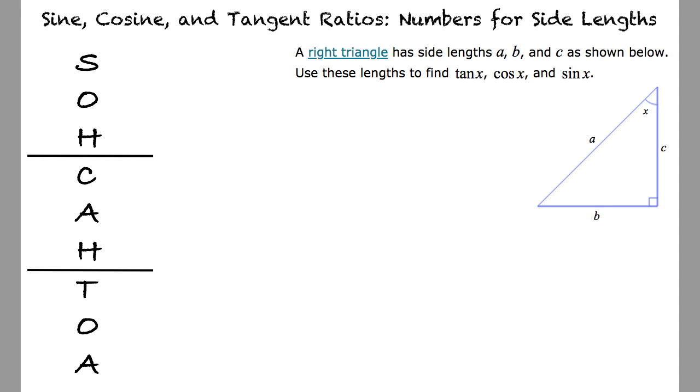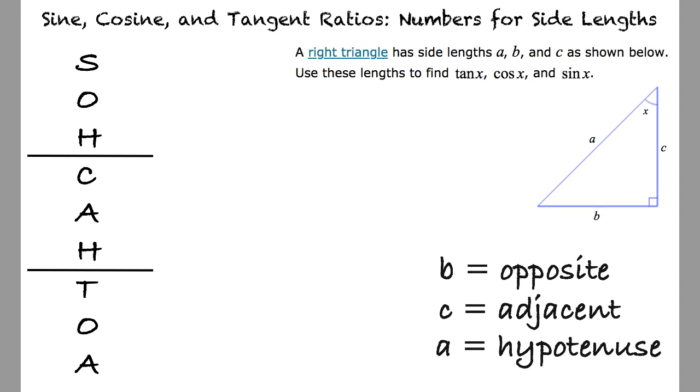For this problem, we can start by identifying the opposite and adjacent sides and the hypotenuse. The opposite side length is b, the adjacent side length is c, and the hypotenuse is a.